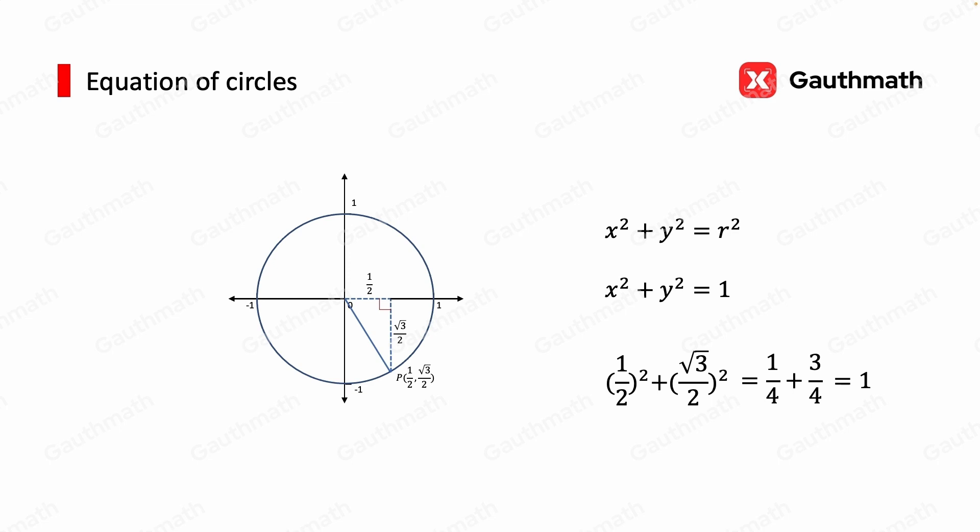So basically, the equation of a circle is just restating the definition that any point on the circle is equidistant to the center. And the distance is called the radius.